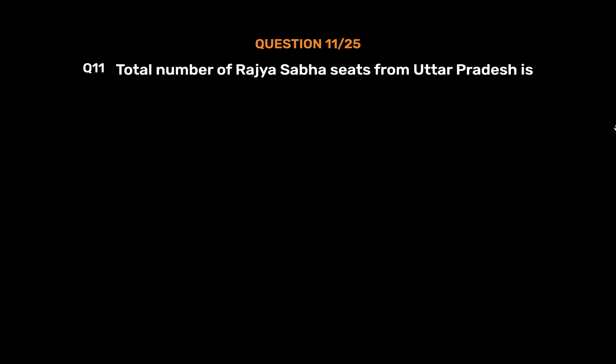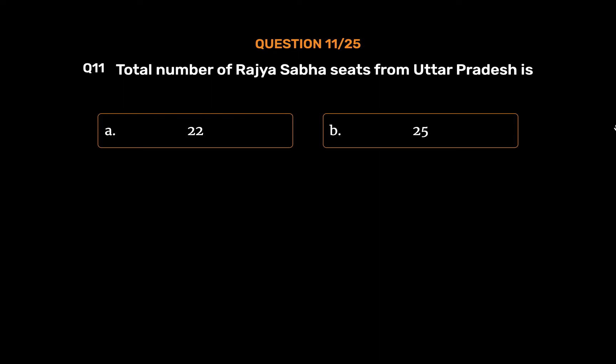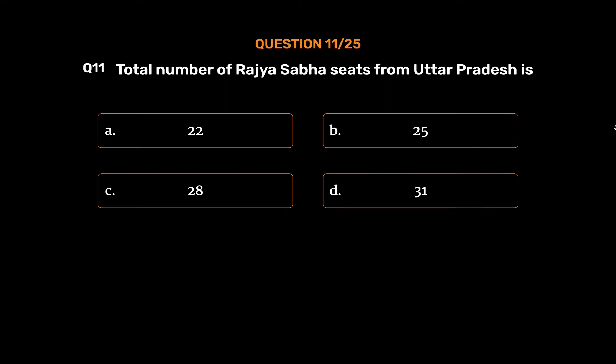Question No. 11: Total number of Rajya Sabha seats from Uttar Pradesh is? Option A: 22. Option B: 25. Option C: 28. Option D: 31. The correct answer is Option D: 31.